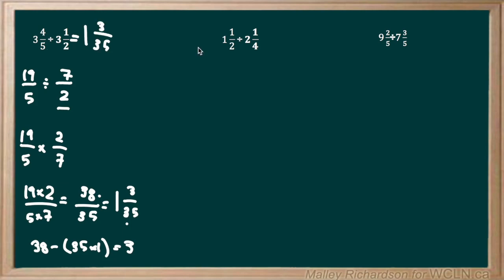Moving on to the next question: we have 1 and 1/2 all divided by 2 and 1/4. Back to our first rule — we convert the mixed numbers into improper fractions. Starting with 1 and 1/2: the denominator stays as 2. For the numerator, we take 2 times 1 and add 1. 2 times 1 gives us 2, and 2 plus 1 is 3. So the improper fraction is 3/2.